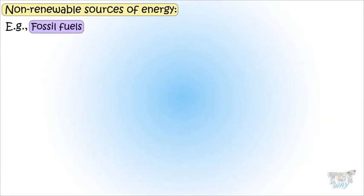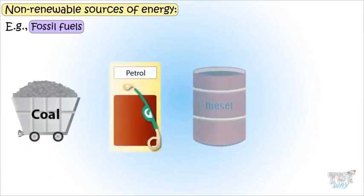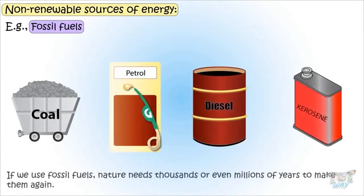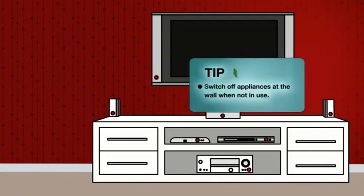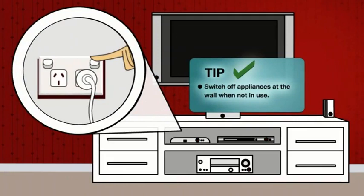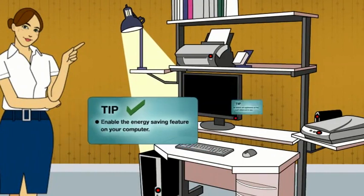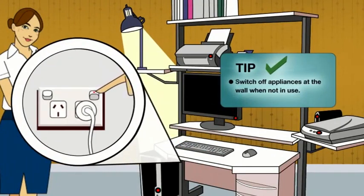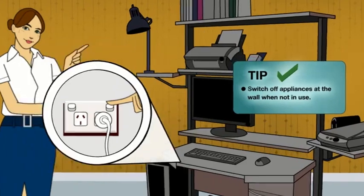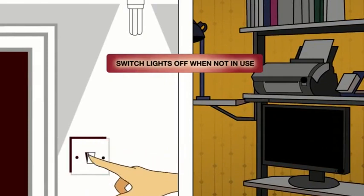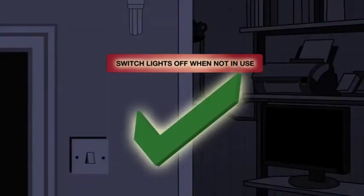So we have discussed non-renewable sources of energy. Many of the things we use depend on non-renewable energy, so there is a need to save energy. If you go on wasting energy, we won't get it afterwards. How to save energy? If you are going out of your room, switch off the fan and lights. In the classroom, if you are going out for drill, the teacher will tell you to switch off the light and fan — to save electricity.